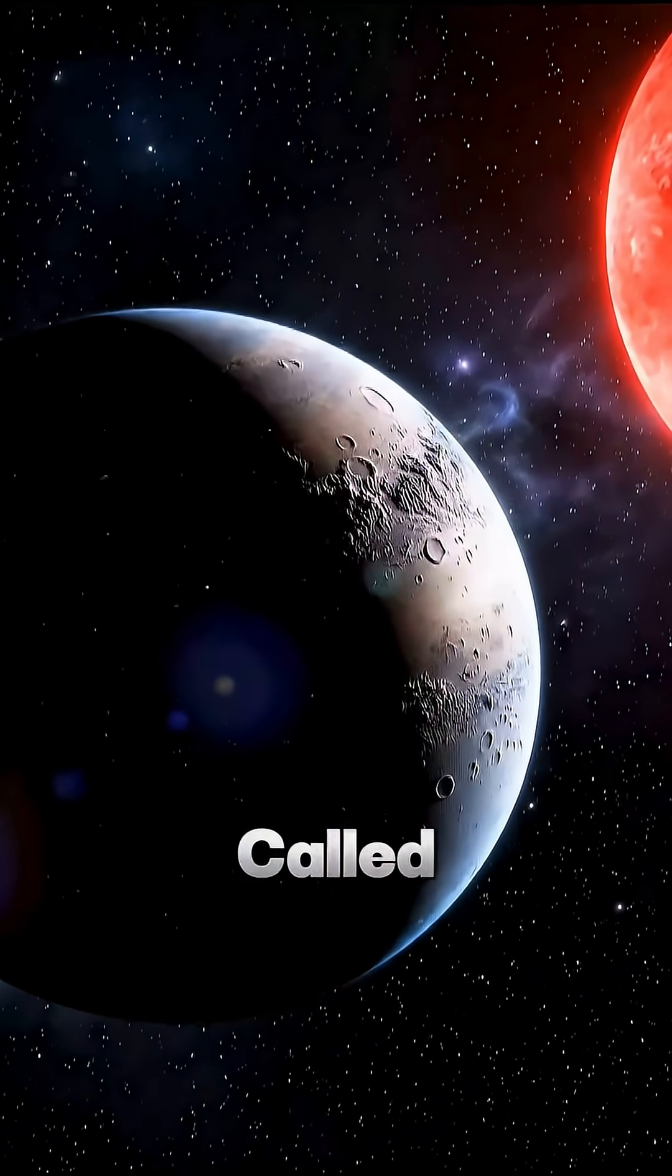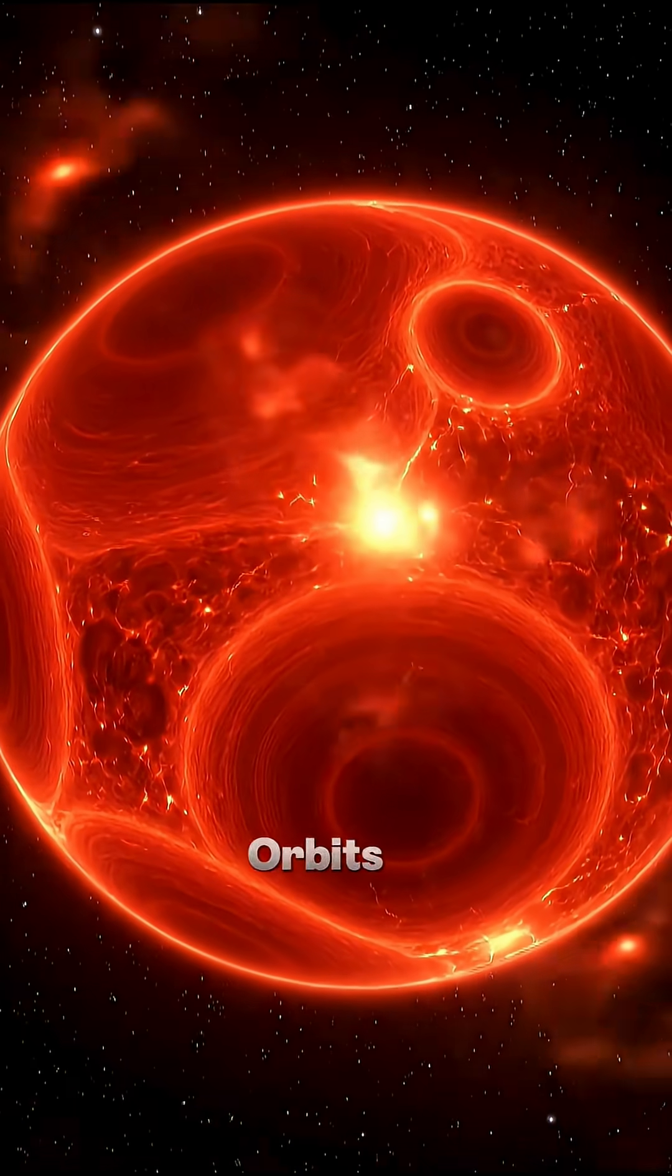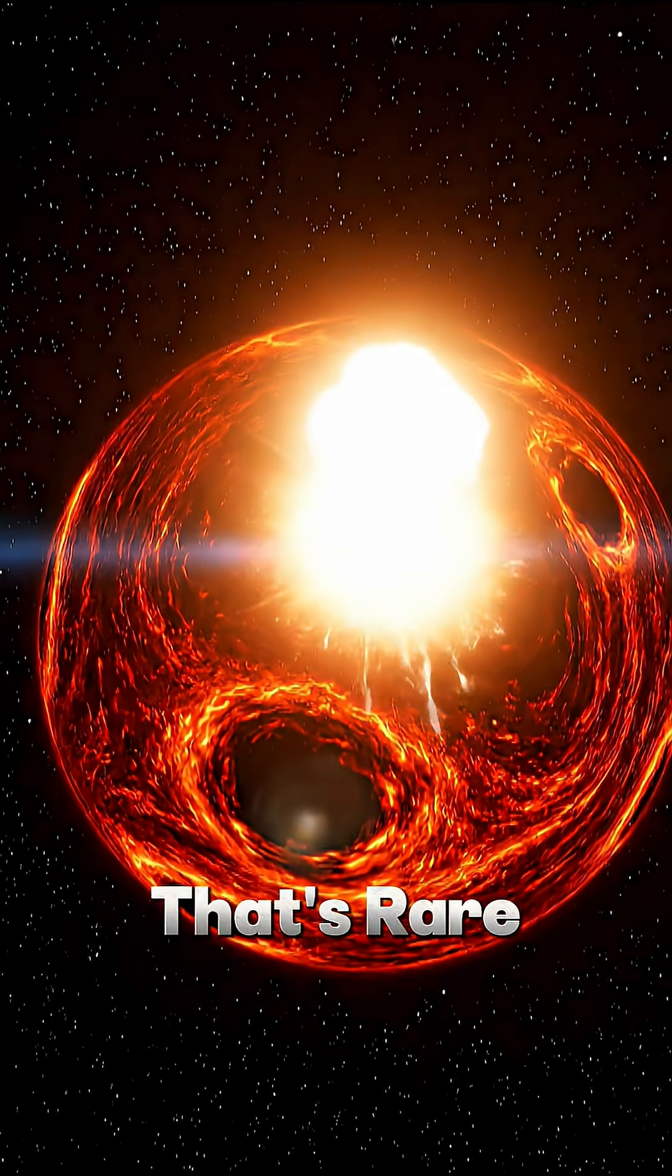This world is called Gliese 12 b. It's almost exactly the size of Earth, but orbits a tiny, quiet M dwarf star. That's rare.